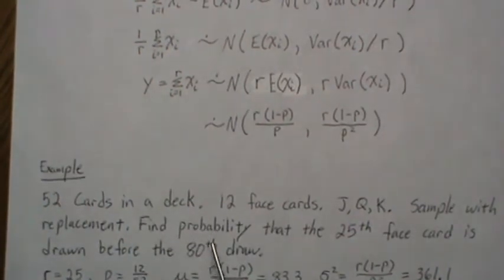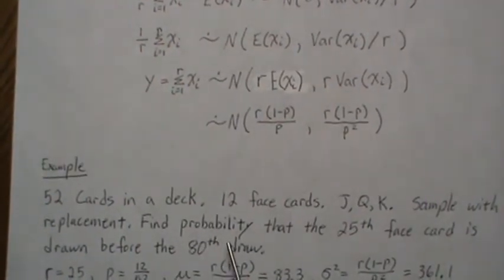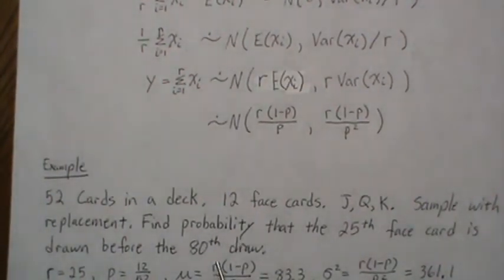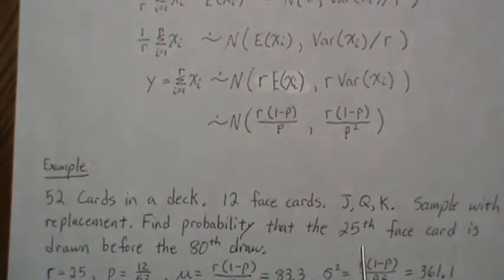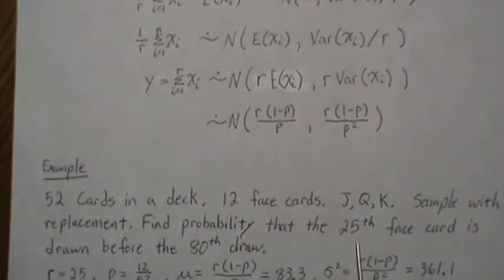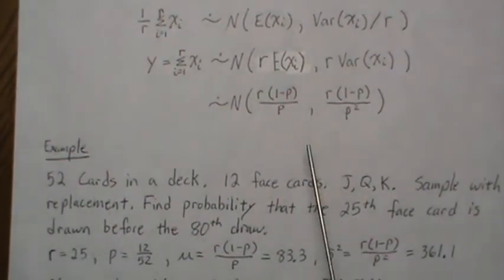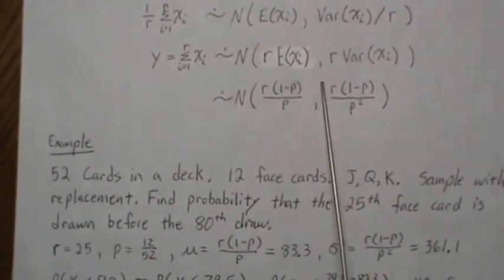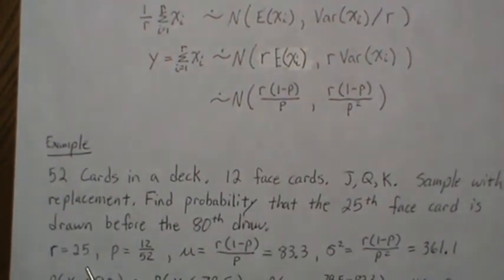Since this is a negative binomial situation, we're going to keep drawing a card with replacement until we find the 25th face card, and then we stop. So this is a classic negative binomial. But let's use this normal distribution to approximate the probability.